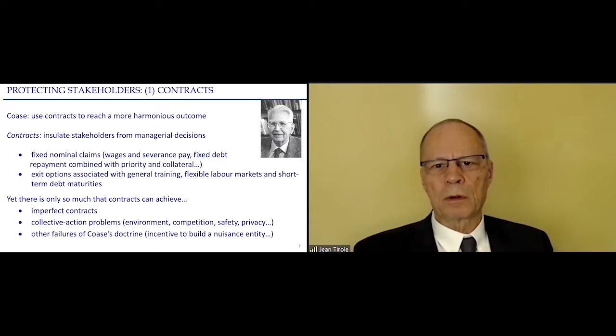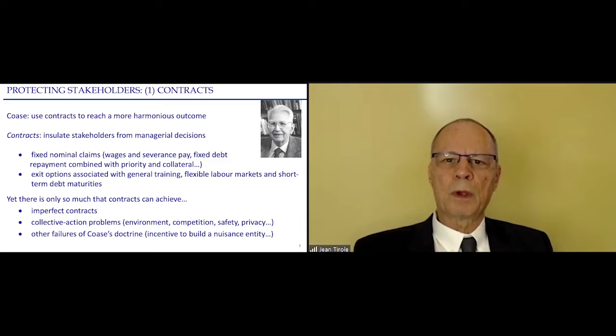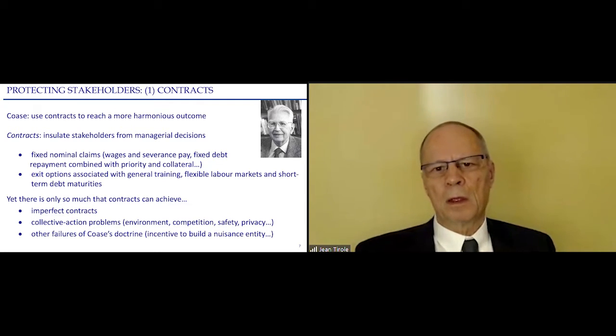For creditors, often it's a fixed claim as well, plus maybe some collateral or priority ranking in case of bankruptcy. The other way of protecting stakeholders is planning an exit option in case they are unhappy with the firm. For example, for workers, that might be general training, flexible labor markets, and so on. At the same time, there is only so much that the contract can achieve.